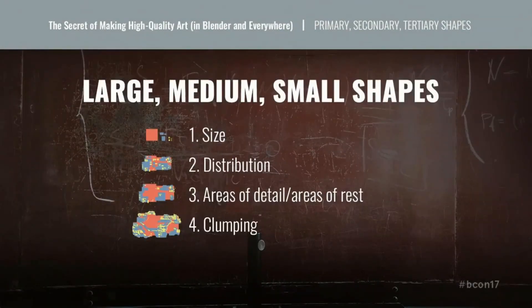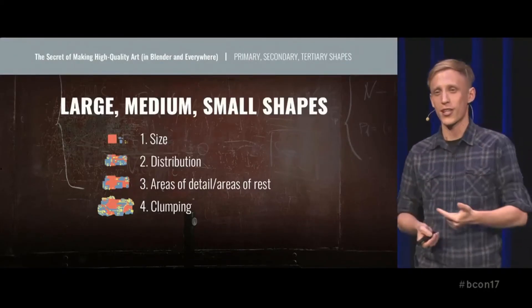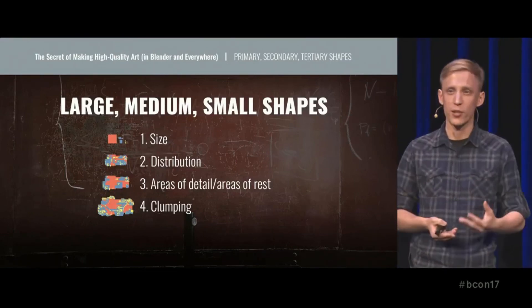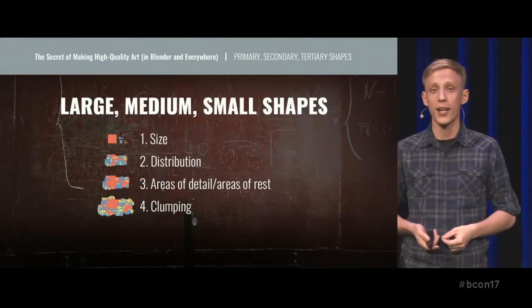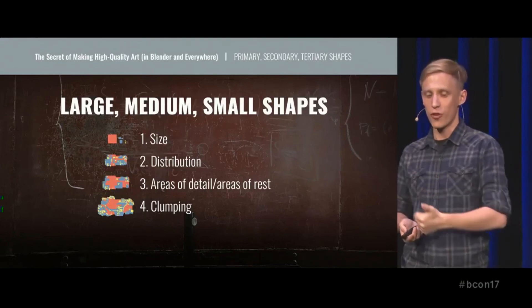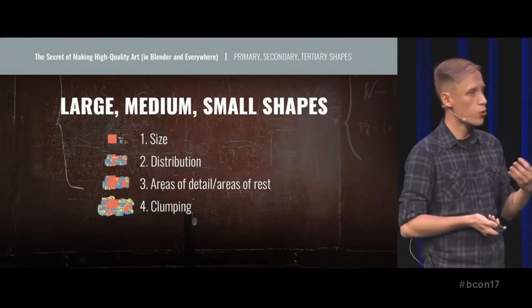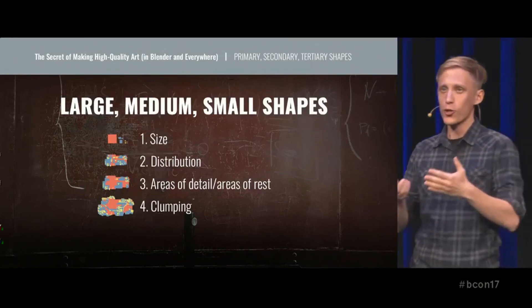These are very important things to consider when making an image. Let's recap them: First, have big, medium, and small shapes with variety in the sizes of shapes in each of the three categories. Make sure the distribution of shapes inside the composition is somewhat unpredictable and chaotic. Balance the areas of details with the areas of rest, and allow clumps or groups of shapes to flourish. The rules are just guidelines, much like every other rule in design and composition — it's up to you as a 3D artist to determine what's right for the composition. But the next time you have this question, don't go straight to Facebook. Just think about big, medium, and small shapes and their distribution. Thank you.